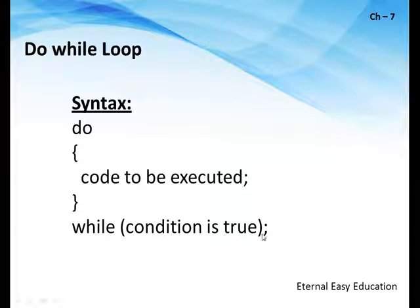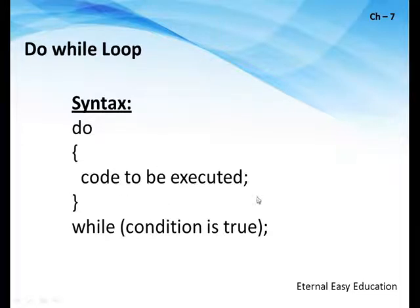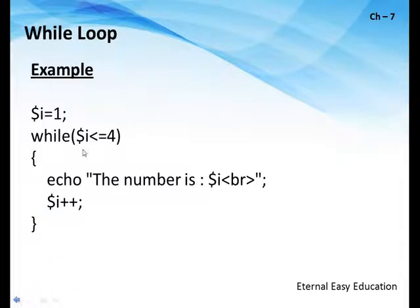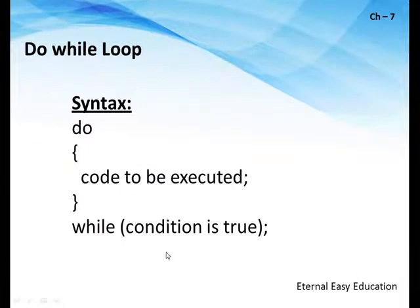So what is the advantage of do-while over while? The do-while will execute the statement at least once even if the given condition is false. Since while is an entry check loop, execution only happens after checking — so if the condition is false at the starting point it will not execute even a single line. But in do-while, since the condition is checked at the end, it will execute the code inside the do block once regardless.